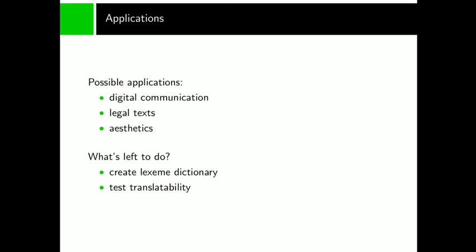Lastly, let me talk about possible applications of bit language. As already mentioned, the binary representation is especially useful for digital communication. The transmission of a language that is directly based on bits would be faster than encoding the Latin alphabet and transferring an encoded English text, for example. Furthermore, because of its logical and unambiguous structure, bit language could be used for texts where ambiguity is unwanted, like laws and other legal texts.